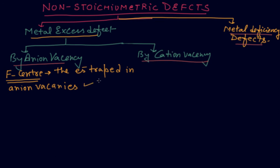The electron trapped in the anion vacancy produces color, and that is called F-center. Due to F-center, color of any crystal will be there. You can put the question: why is any crystal colored? You say that F-center.